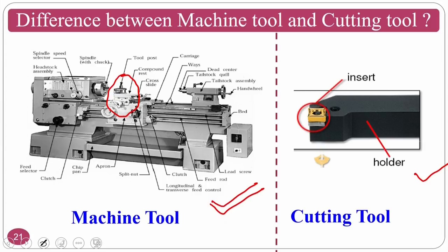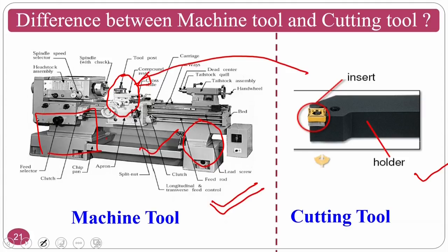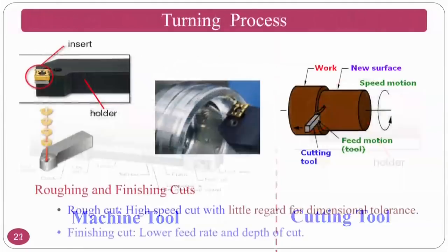The machine tool is normally made up of cast iron because of its vibration damping effects. Carbon in cast iron in the form of graphite provides the damping effect — that is why the lathe bed and other parts are completely made up of cast iron. However, the tool is made up of much harder material compared to the work piece material. That is why cutting tools are made up of HSS, carbide, diamond, and so on.